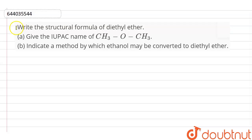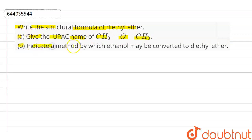Here is a question: write the structural formula of diethyl ether. Option A: give the IUPAC name of CH3OCH3. Option B: indicate a method by which ethanol may be converted to diethyl ether.